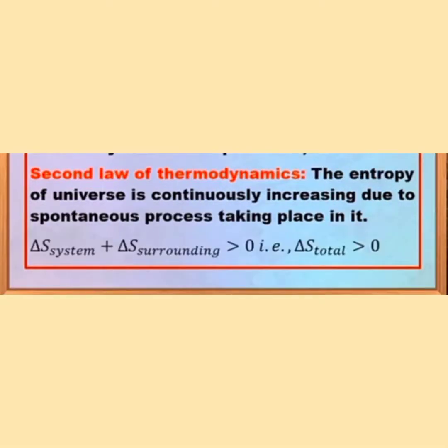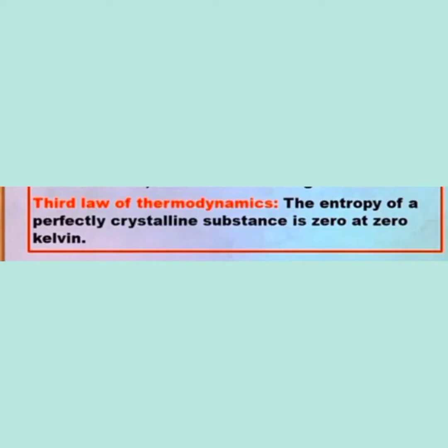The second law of thermodynamics states that the entropy of the universe is continuously increasing due to the spontaneous processes taking place in it — delta S total is greater than 0. The third law of thermodynamics states that the entropy of a perfectly crystalline substance is 0 at 0 Kelvin.